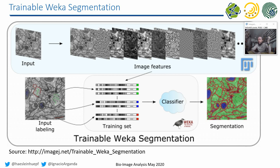That classification can be more than just binary — it doesn't have to be just black and white. It can also be, as you see in this example, red, green, blue. You can have quite different numbers of pixel classes.